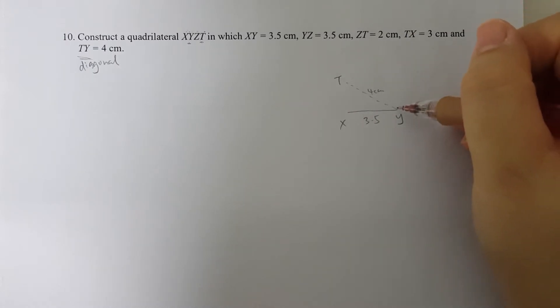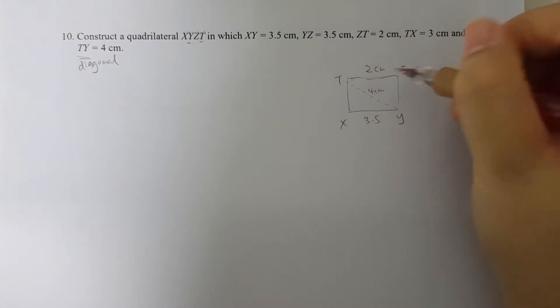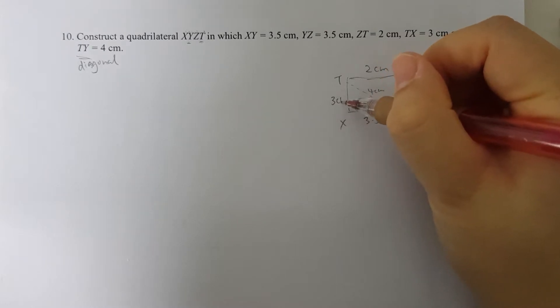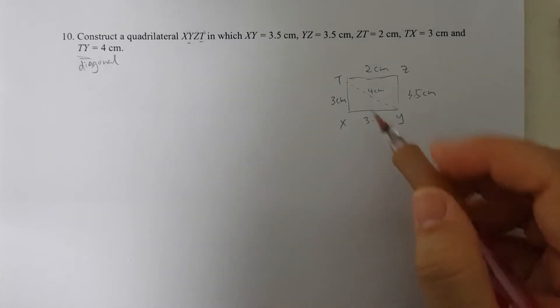Then YZ is 3.5 as well. I don't know how it would be like, so I'm just going to draw out. 2cm, 3.5cm. TX is 3cm. So this is just a rough guide. With this sketch.